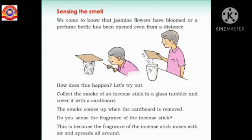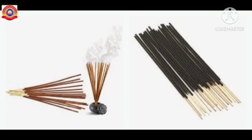We all know that the nose is the sense organ which helps us to identify the smell of things. To study how this happens, we have to do an experiment given in your textbook on page number 80. To do this experiment, we need: an incense stick, a glass tumbler, and a cardboard. An incense stick is a substance which releases fragrant smoke when it is burnt.